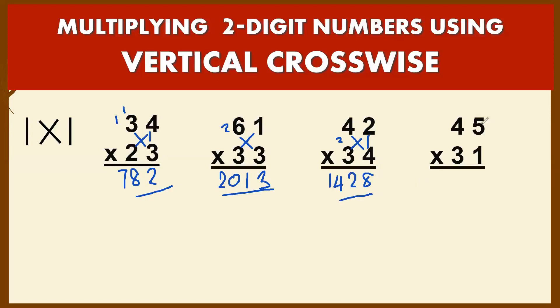Last is 45 times 31. You multiply the first columns: 5 times 1, that is 5. Crosswise, we have 4 times 1, that's 4, then 3 times 5, that's 15. 15 plus 4 is 19. So you bring down 9 and carry 1.